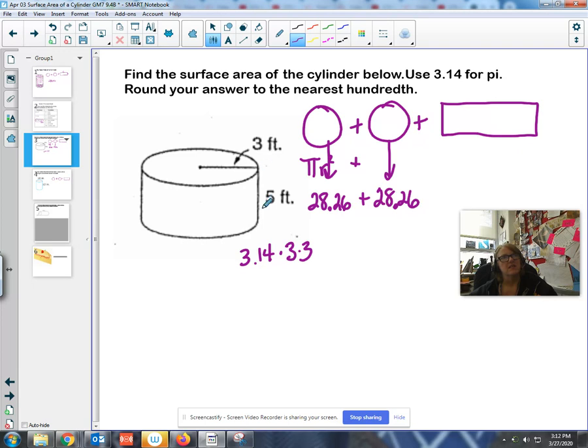This piece, this five is this side of the rectangle, the height. The bottom of the rectangle is once around the circle. That's the circumference, which is going to be pi times diameter. So let's see here. Diameter's all the way across, that's going to be six. So I have to take pi times six times five. So go ahead and grab your calculator. 3.14 times diameter is six times the height, which is five. And you should get 94 and two tenths.